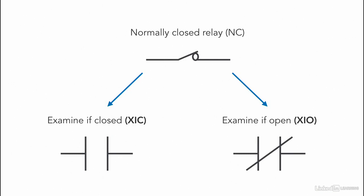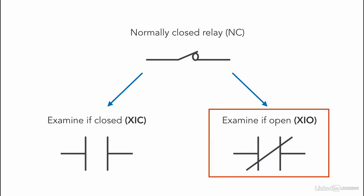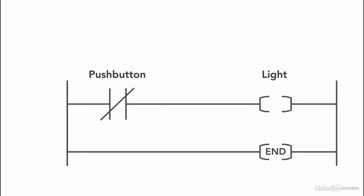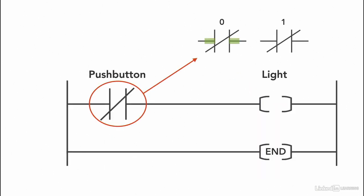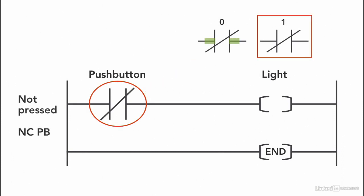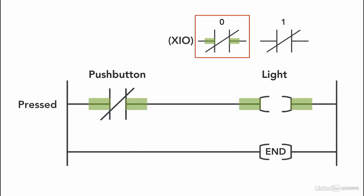Now, using the same physical device — a normally closed relay — with the examine if open (XIO) instruction. XIO is activated when the memory location is 0. So if the push button is not pressed, the memory location is 1 because we're using a normally closed relay. As a result, the XIO instruction will not be highlighted and the light will not turn on. Once the push button is pressed, the memory changes to 0, XIO is activated, and the light will turn on.